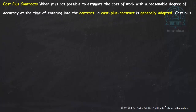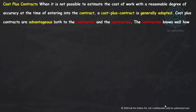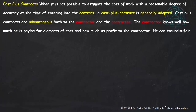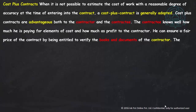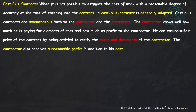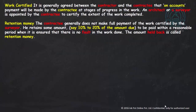Cost plus contracts arise when the contractor does not have experience in a particular type of work and is unsure how to quote the price. In a cost plus contract, the contractor shows all bills to the contractee detailing how much cost was incurred, then charges a suitable percentage of profit on that. This benefits both parties — the contractee knows exactly what he is paying for each element of cost and how much profit is charged.